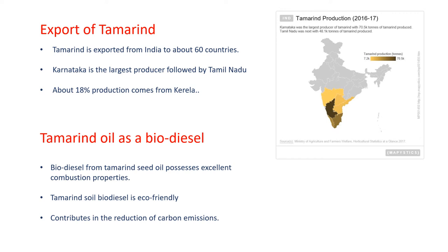Now, if we talk about tamarind oil as a biodiesel, biodiesel produced from tamarind seed oil possesses excellent combustion properties and it can be adopted for use in engines. Moreover, tamarind seed oil biodiesel is environmentally friendly and can contribute to the reduction of carbon emissions when used as an engine fuel.